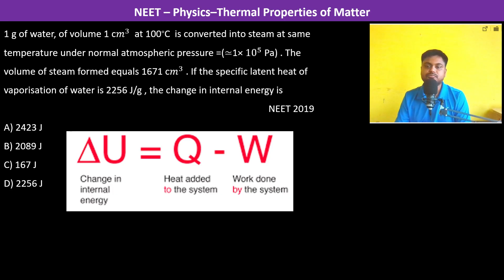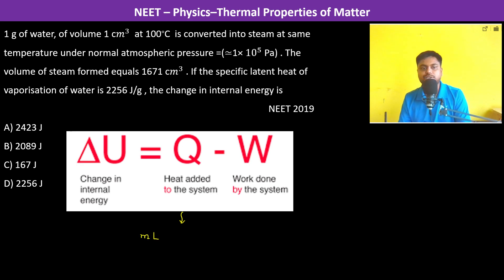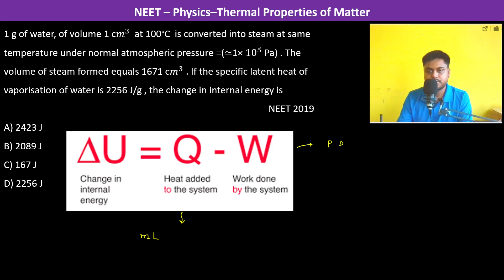The change in internal energy is delta U equals Q, the heat added to the system, minus the work done by the system. The heat added is M into L, the latent heat of vaporization of water, and the work done by the system is P into delta V. Let us find each individually.